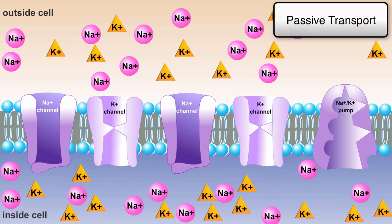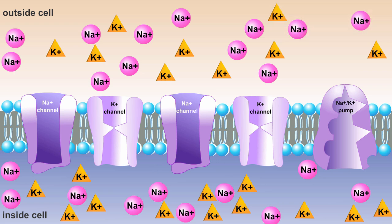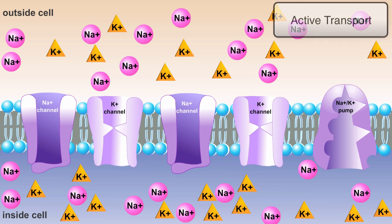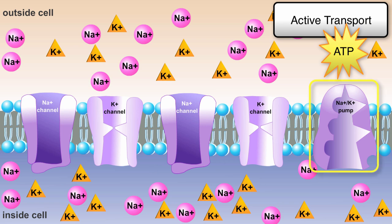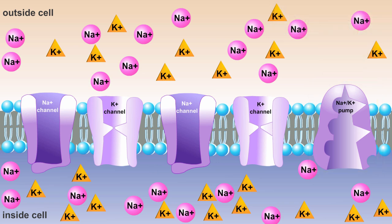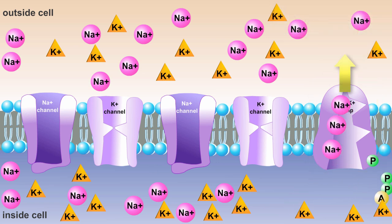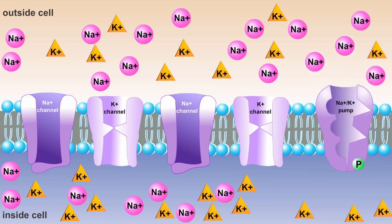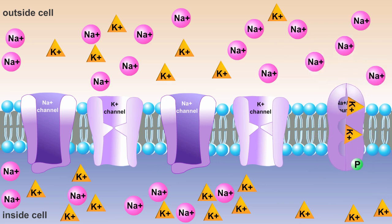But what if we want to move ions against their concentration gradient, meaning from areas of low concentration to areas of high concentration? For that, we need to rely on active transport. Active transport requires energy in the form of ATP. The proteins that conduct this form of transport are often called pumps because they force ions to move against a gradient. One of the more common examples is the sodium-potassium pump, which moves sodium ions back out of the cell and potassium ions into the cell.